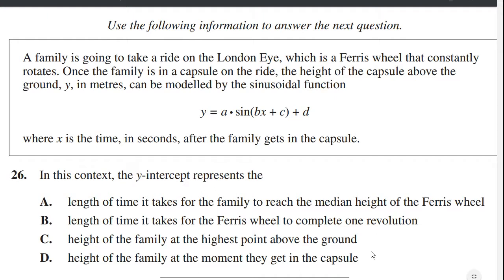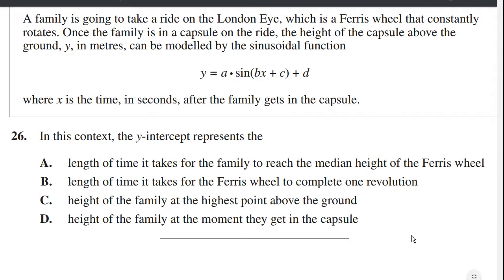A family is going to take a ride on the London Eye, which is a Ferris wheel that constantly rotates. Once the family is in a capsule on the ride, the height of the capsule can be modeled by the sinusoidal function, where x is the time in seconds after the family gets into the capsule. In this context, the y-intercept represents the... So what do we know about y-intercepts? The y-intercept is when x equals 0. And what's x? x is the time in seconds after the family gets in. So if x equals 0, what we're talking about is the exact time that they got in the capsule. So the exact time that they got in the capsule, y is equal to the height of the capsule above the ground. So in other words, the height of the family at the moment they get into the capsule. The answer is D.